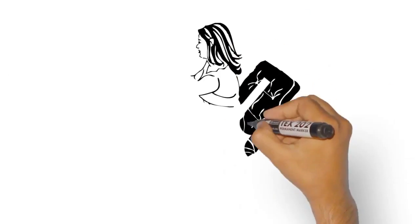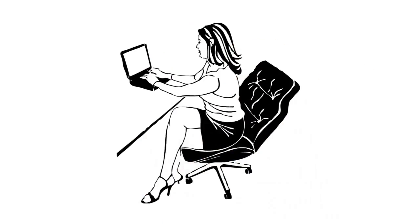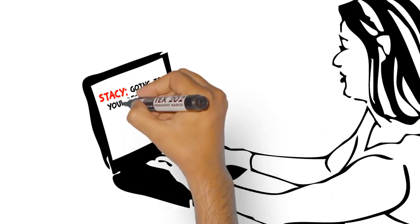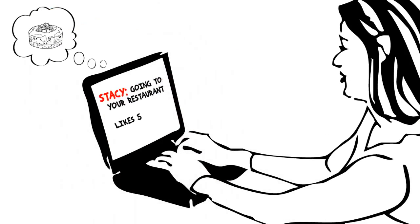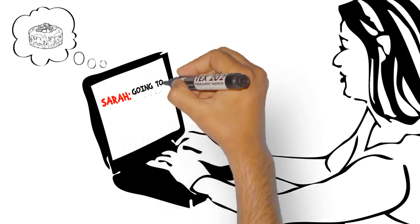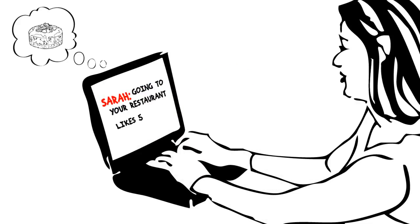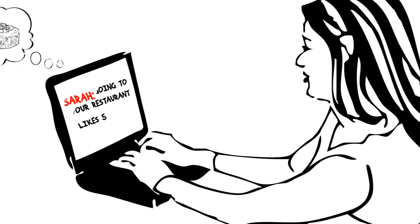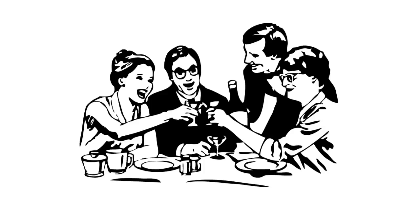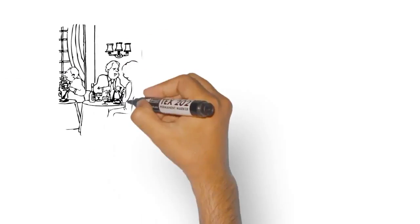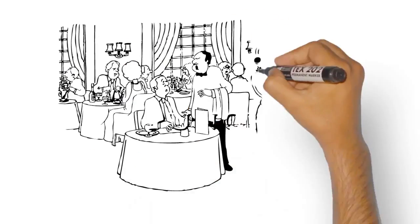If any of Stacey's friends see her status and want that free dessert, they can post about it too. They get five likes, you get free advertising. They all get cheesecake and you get all the customers that you need. Here is your restaurant.